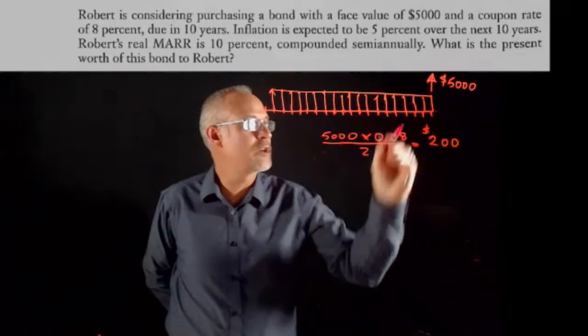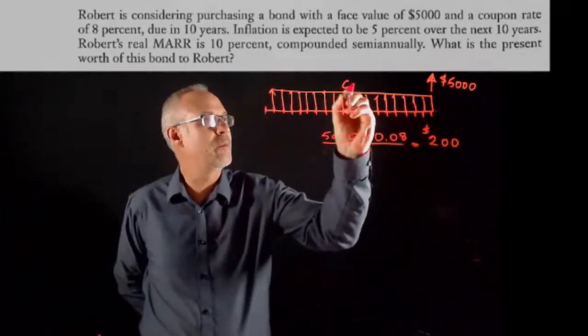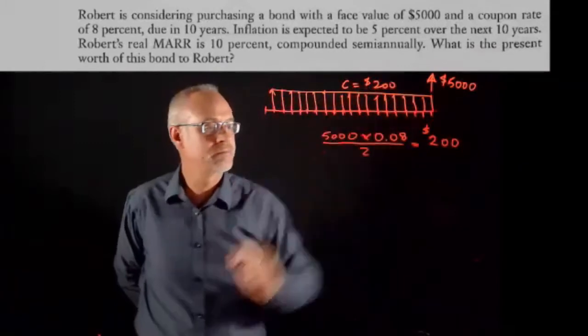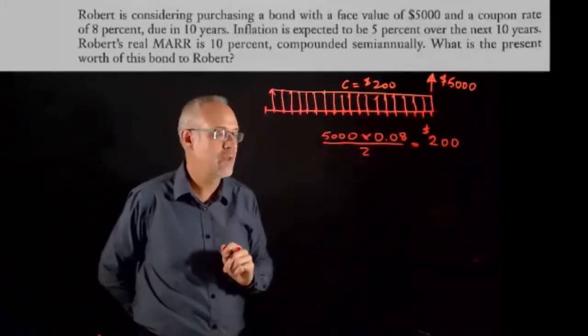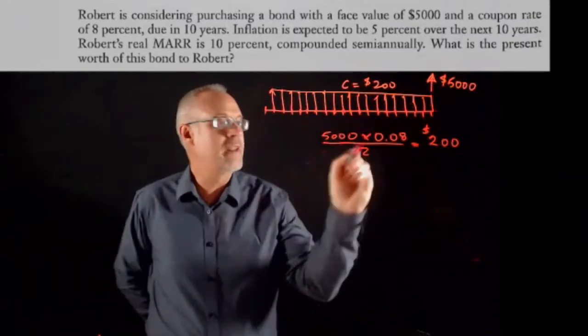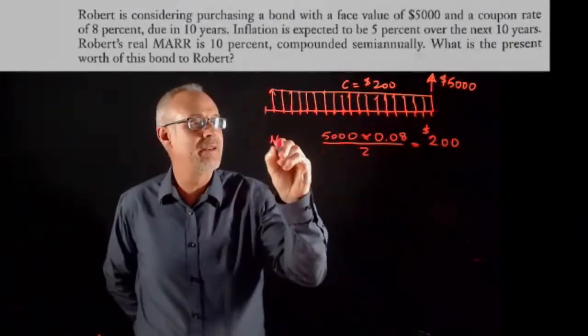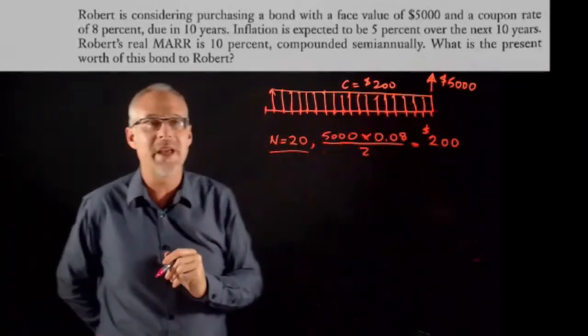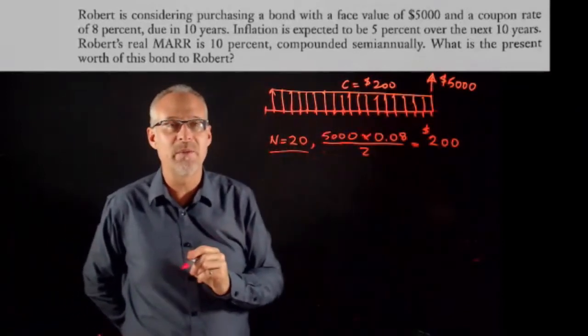And is that $200? Which is what someone has suggested. So our coupon payment, which is an A, we'll say is $200. I should also mention that it says it's 10 years, but for a bond that means N is 20 because our coupon payments are every six months.